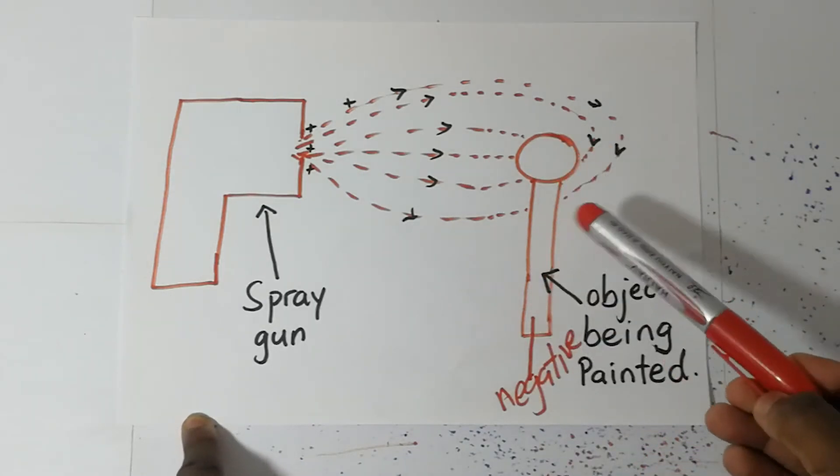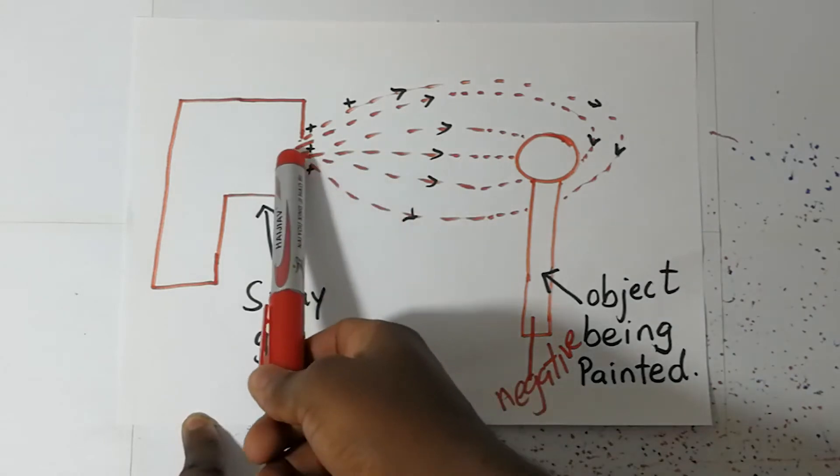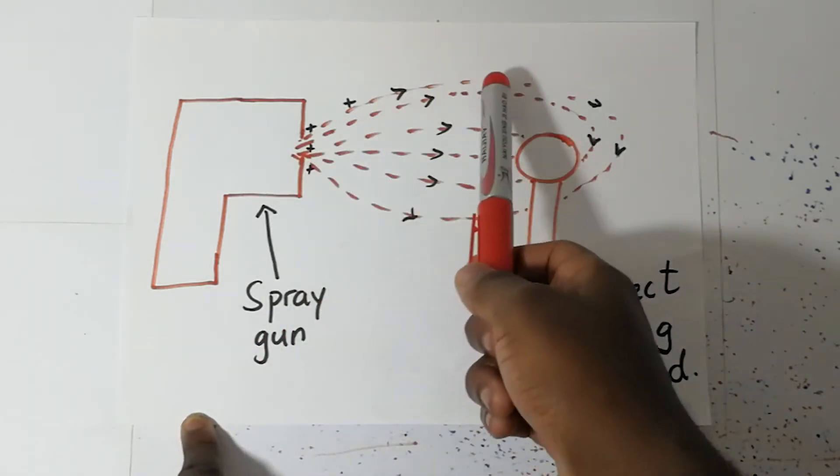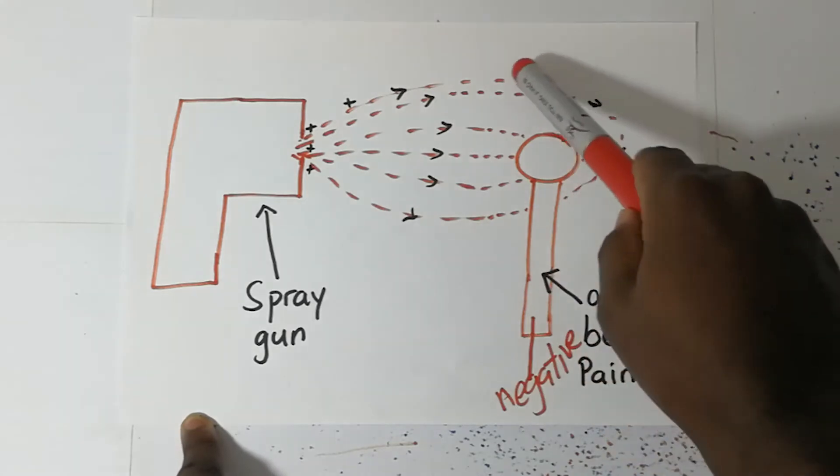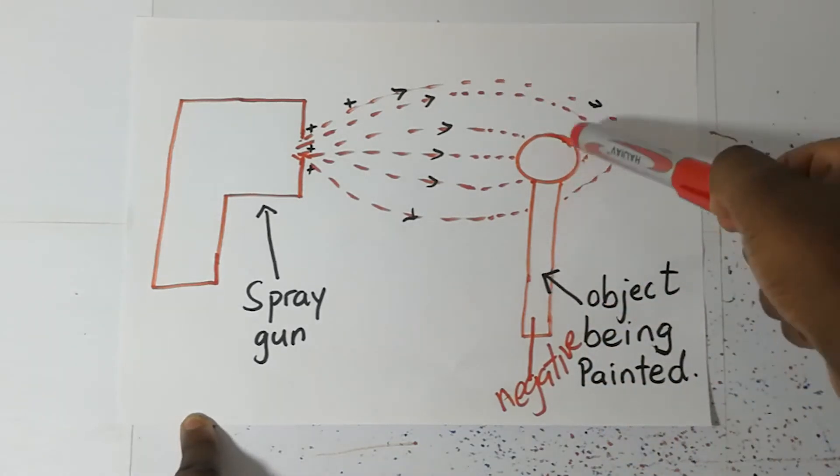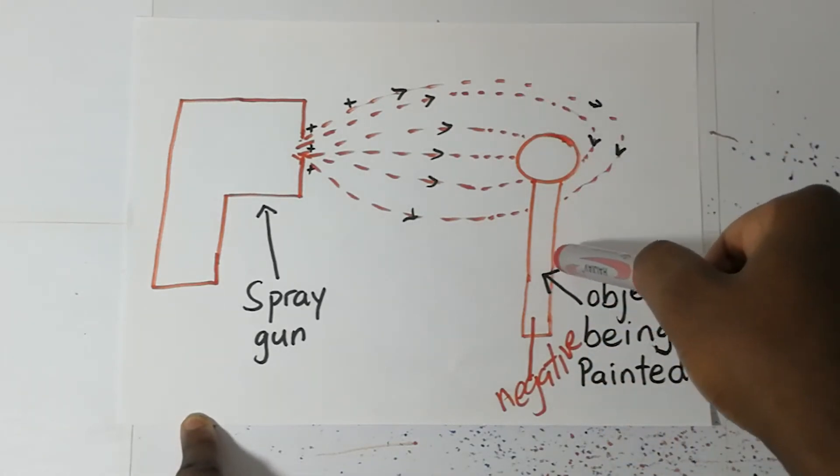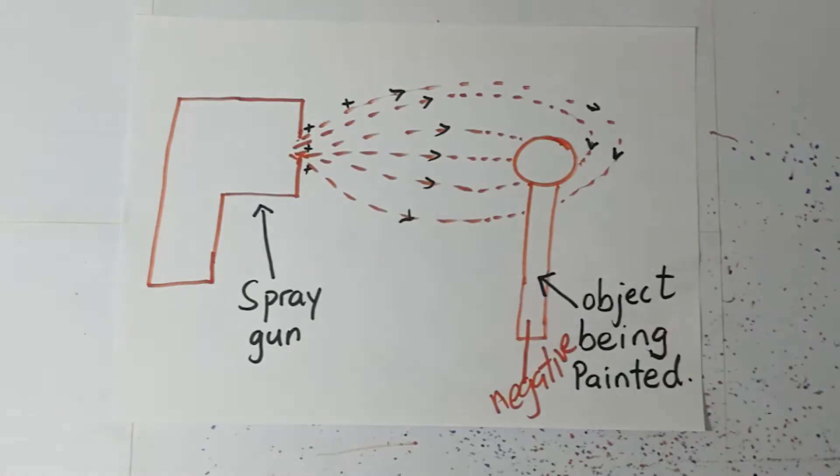Even as you're spraying, if any paint goes astray, it is attracted to this object because it is negatively charged. We know that one of the laws of electrostatics is that unlike charges attract. This setup ensures minimal wastage of paint during spraying.